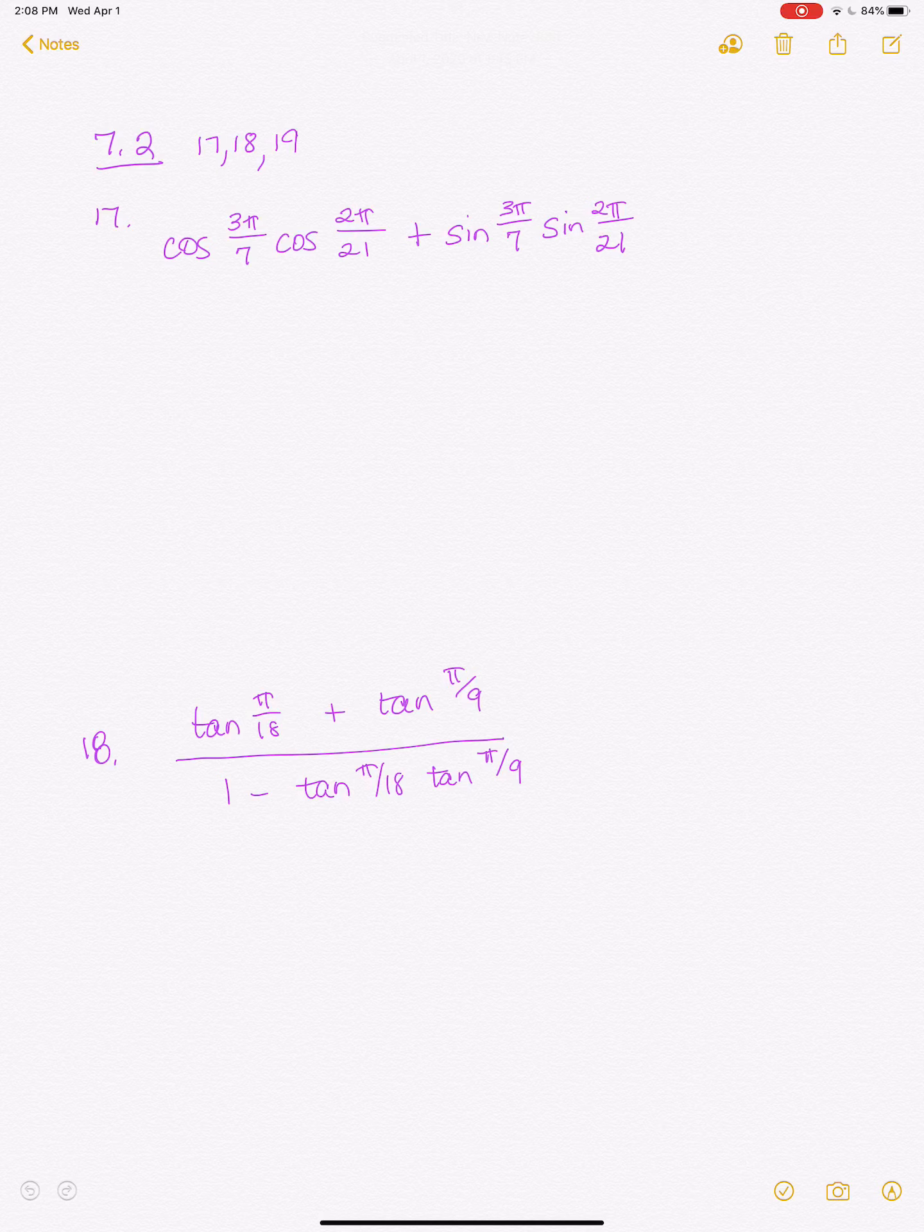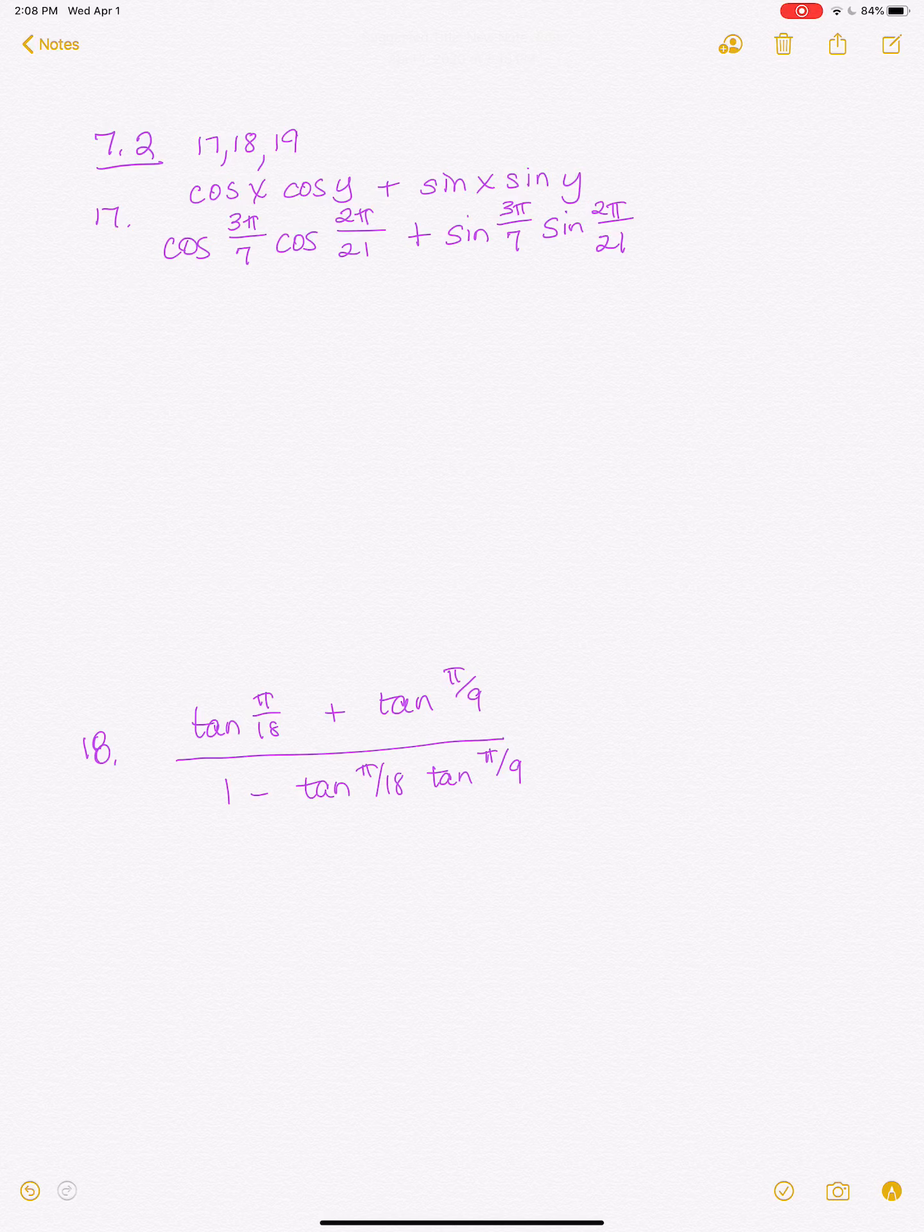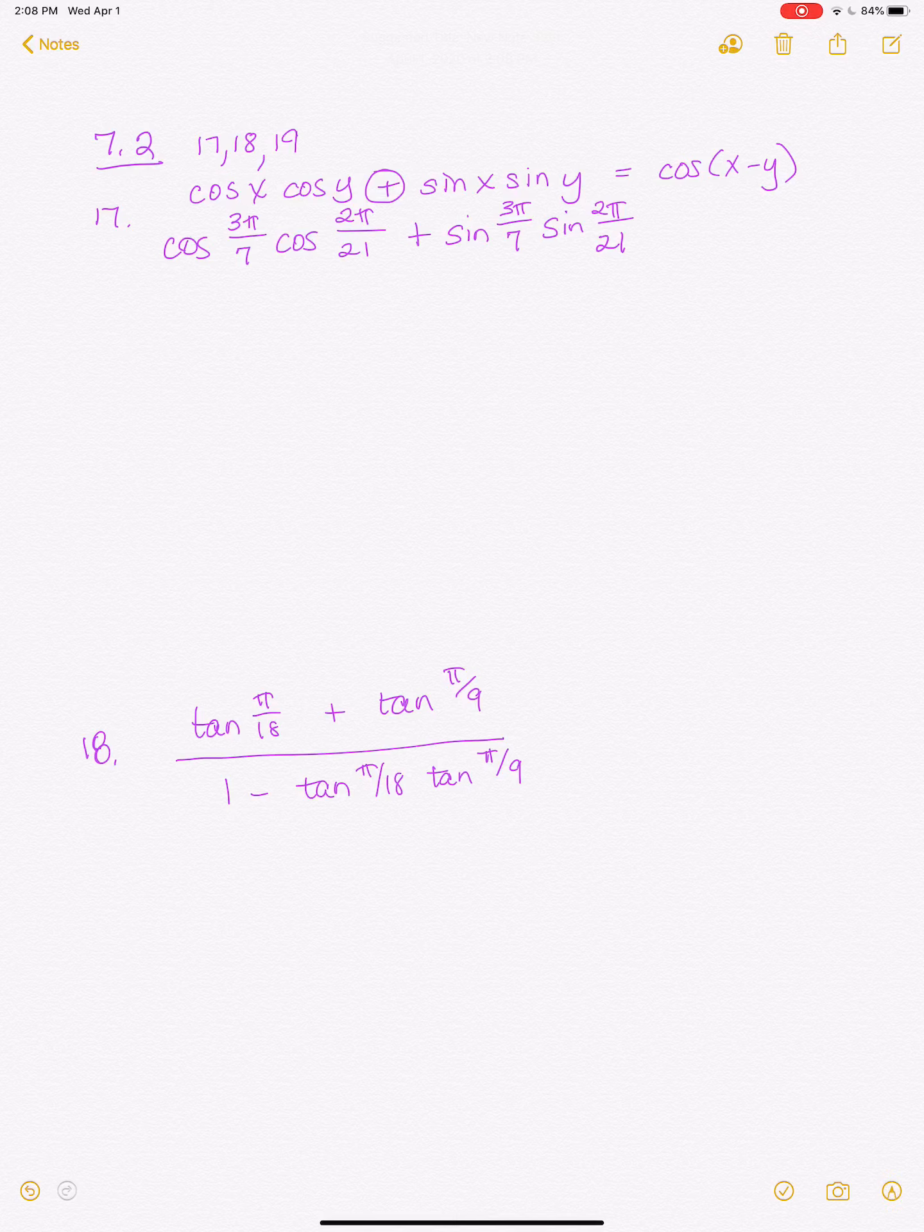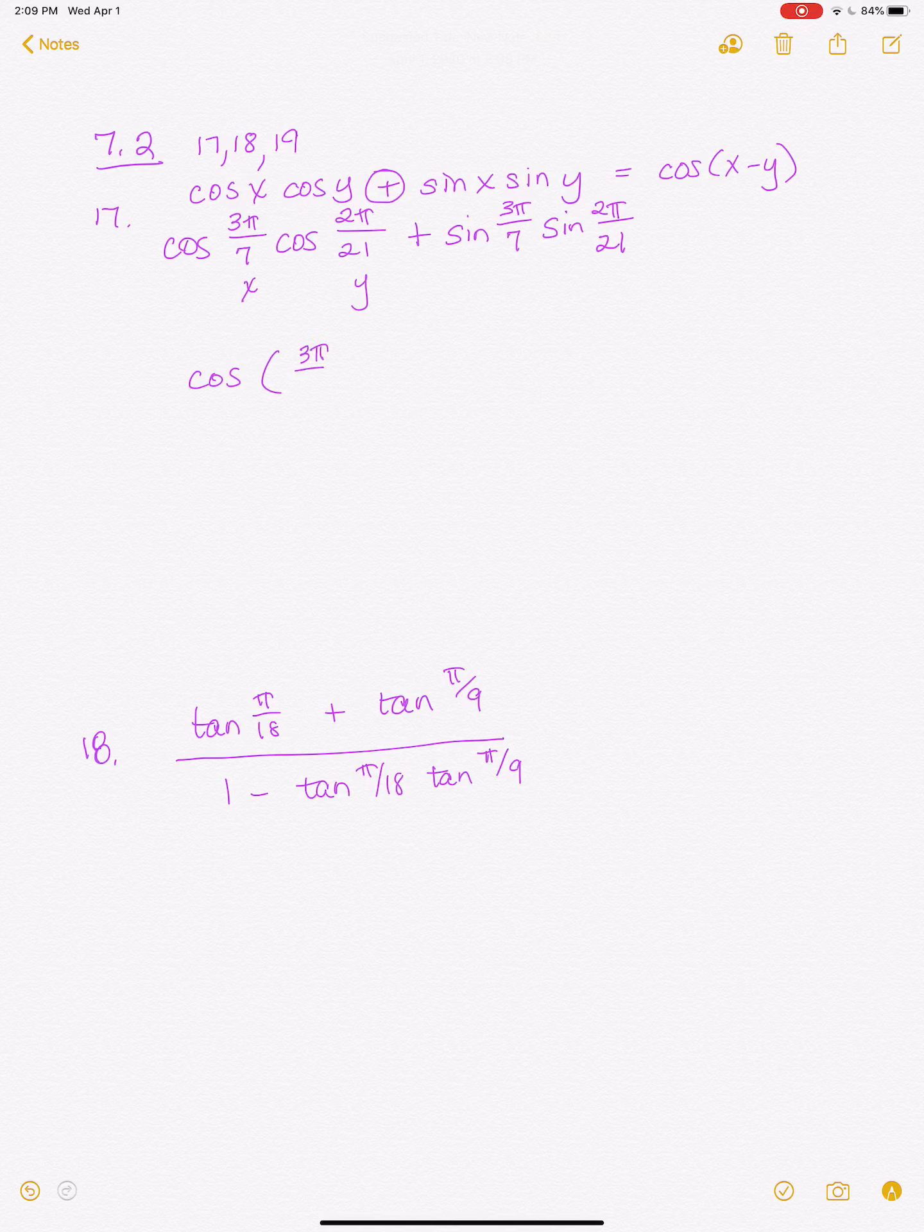So this should look familiar. This is the cosine of x, cosine y, plus sine x, sine y, which you know is the subtraction formula. Cosine is the opposite sign. This is the subtraction formula for cosine. So that's what I'm going to do here. I'm going to go the other way with it. So this is my x. This is my y. So I really know that this is the cosine of x, which is 3 pi over 7, minus my y, which is 2 pi over 21.